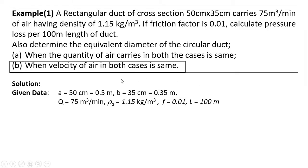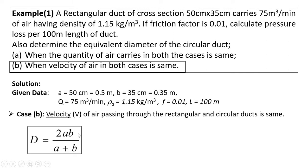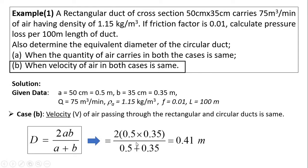For the second criteria — when velocity of air in both cases is the same — we use the second formula for equivalent diameter of circular duct. By putting values of a and b, we get equivalent diameter D = 0.41 m. So in this way we can calculate the equivalent diameter of circular duct for a given rectangular duct.